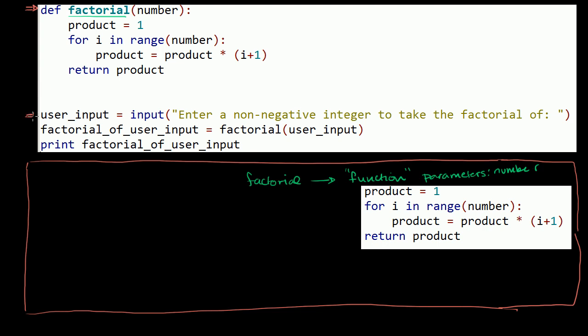and then we get to this line right over here. And it says the variable user input is equal to, and then it calls the function input, and it passes the function input. And I'm starting to use a little bit of the terminology that we've been exposed to. It passes the function input a string. So this right here is a string. And once again, string sounds like a fancy word, but it literally means string of characters. Or this text right here. The text, enter a non-negative integer to take the factorial of colon space.